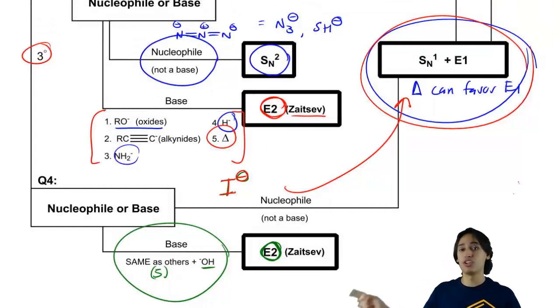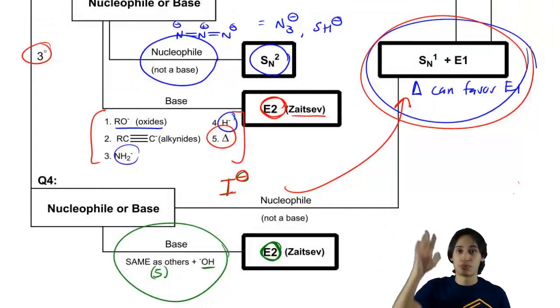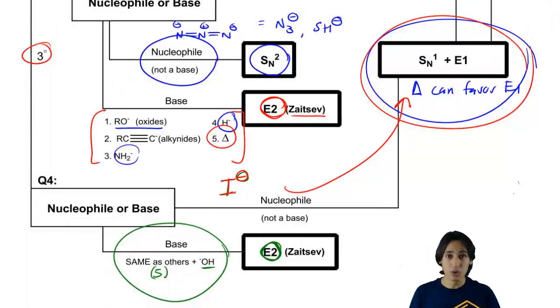I just need you to memorize what are the good bases, what are the different pathways for primary, secondary, tertiary. If you know that, how do I tell if something is neutral or negative? If you know those things, guess what? You could go into your test not knowing much about why this flowchart exists and still get every single mechanism right. And that's because you memorized the flowchart and you know how to use it.